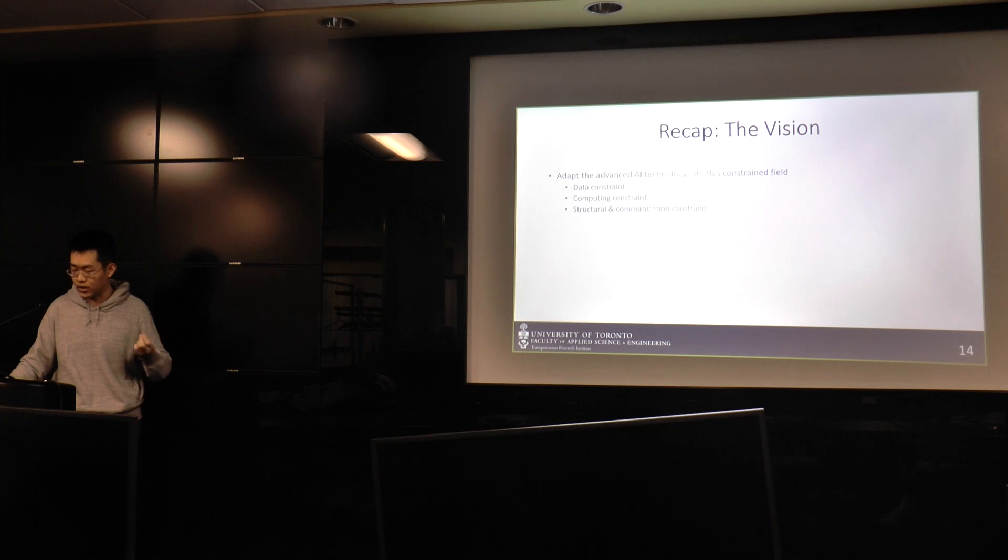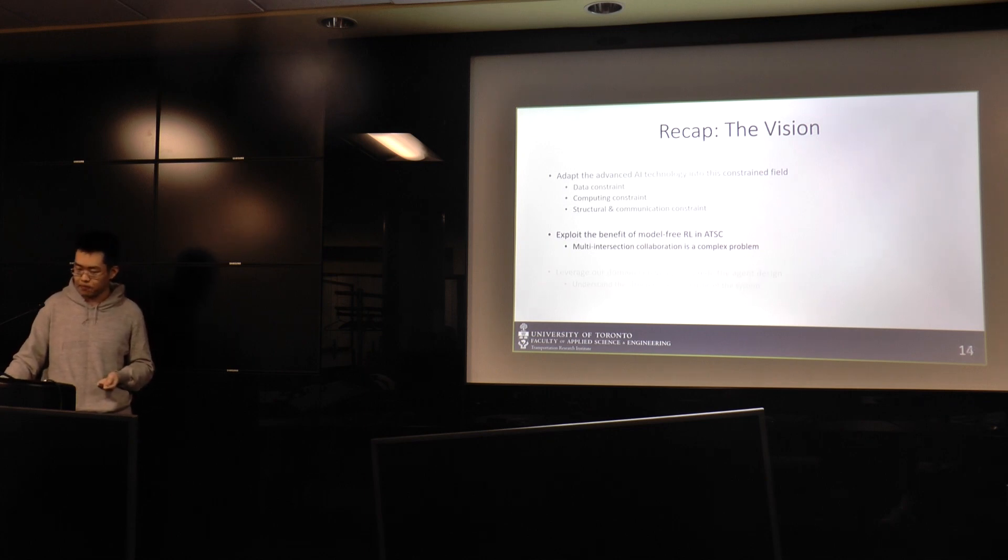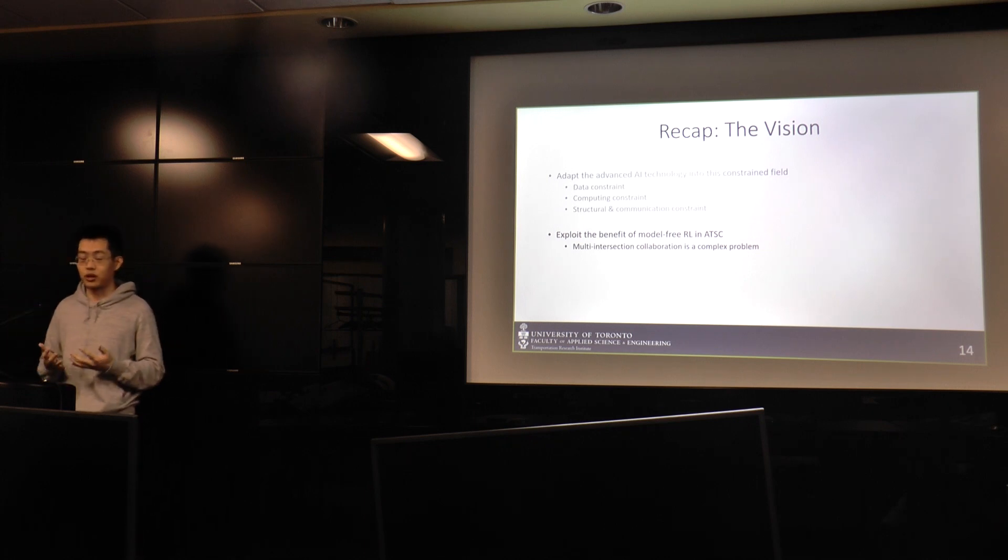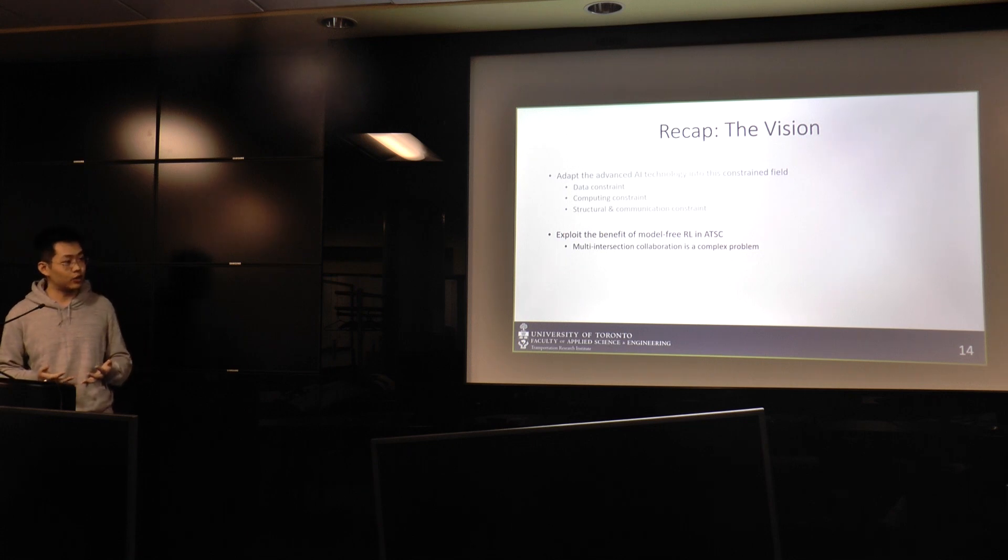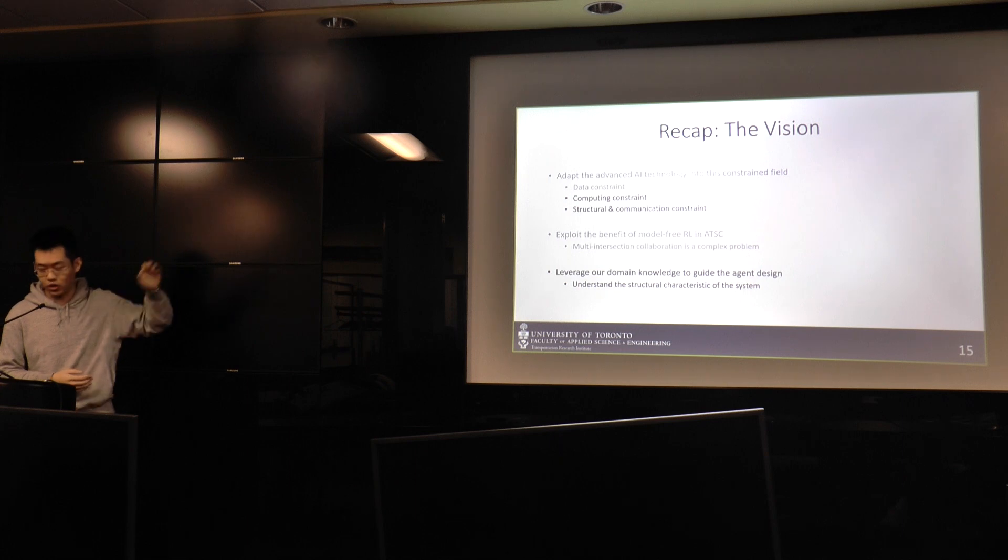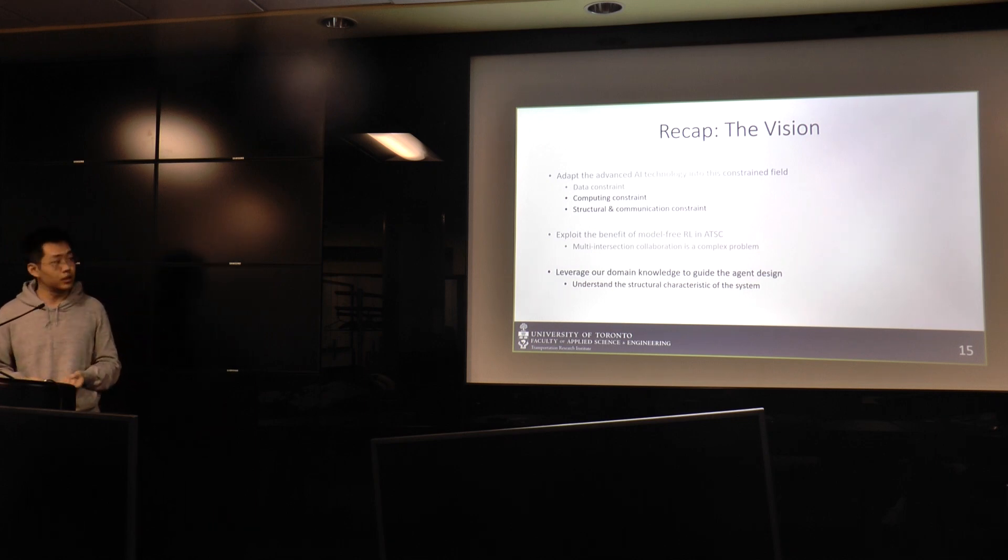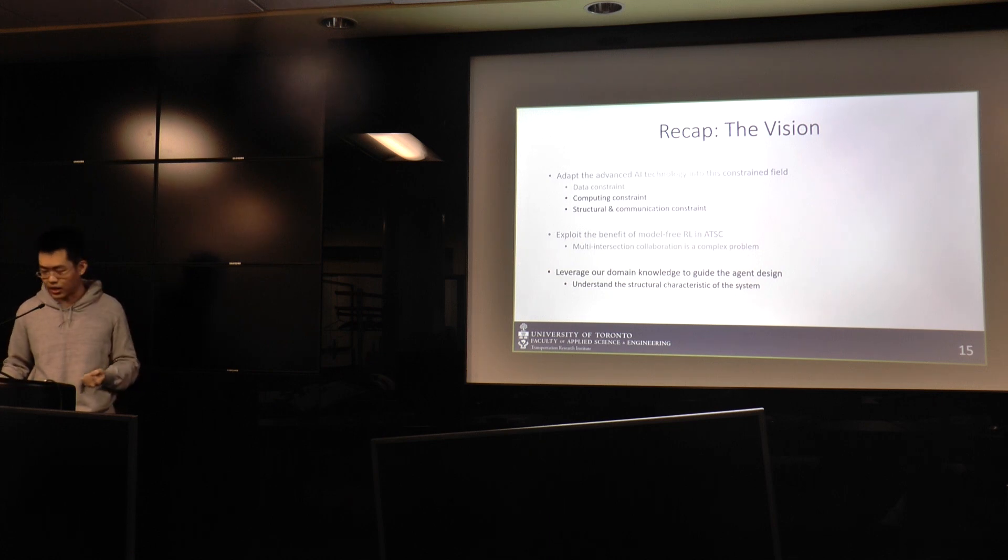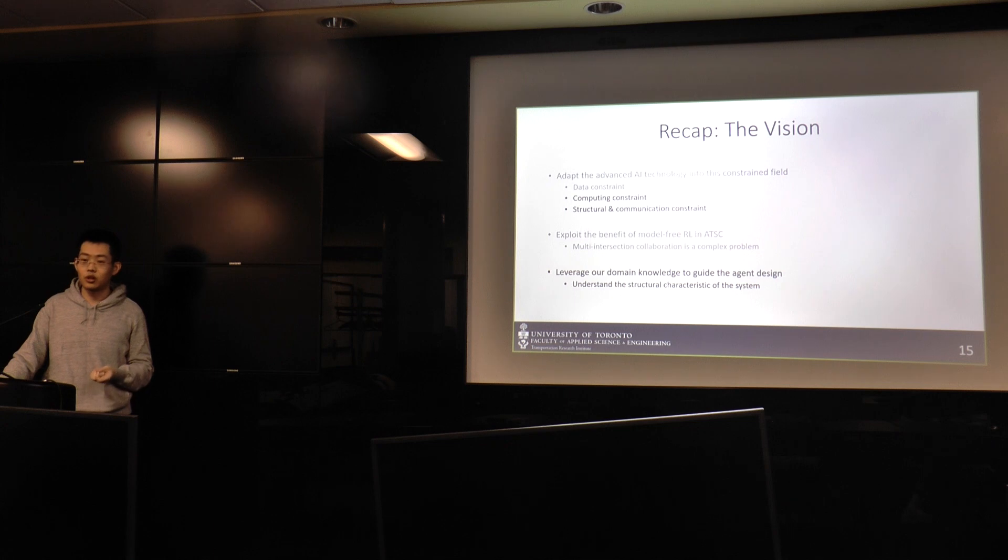So back to our vision, we want to address all these constraints and deploy the model-free RL approaches. And now we know that when your task is really complex and you don't have the capability to calibrate a good enough model, maybe a model-free approach is better. So now we know that we should go with this approach. What should we do? We still have those constraints, unsolved questions, and we've already talked about that understanding the world, understanding the model of the world is extremely important. How can we leverage our domain knowledge as a traffic engineer to guide the agent design in order to at least address the constraints highlighted above?